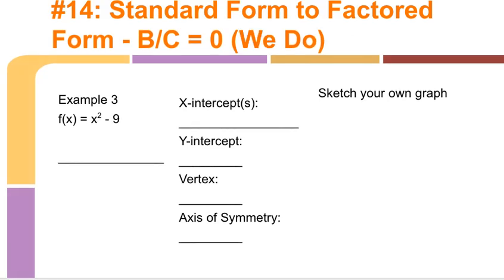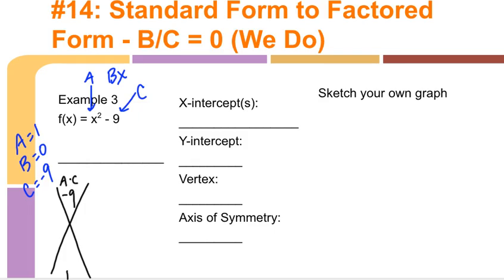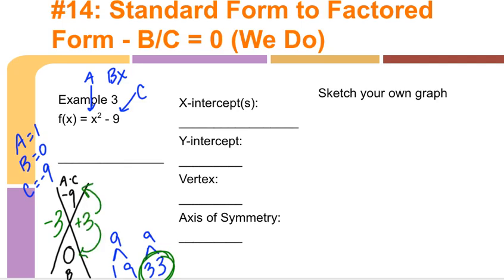Example three has x² - 9. A is 1, B is 0 (no x term), and C is negative 9. Setting up the diamond: A times C is negative 9 at the top, B is 0 at the bottom. Factors of 9 are 1 and 9, or 3 and 3. Using 3 and 3 with opposite signs: negative 3 times positive 3 makes negative 9, and they form a zero pair adding to 0. So f(x) = (x - 3)(x + 3).